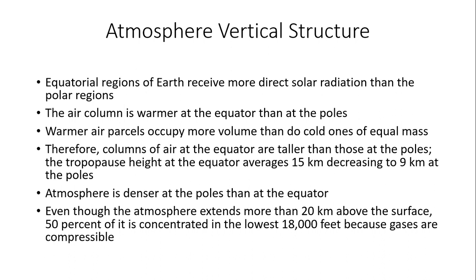The tropopause — the transition zone between the troposphere and the stratosphere — averages about 15 kilometers above the ground at the equator, decreasing to 9 kilometers at the poles. So in general, the atmosphere is much denser at the poles compared to the equator. Even though the atmosphere extends more than 20 kilometers above the surface, 50% of the atmosphere is concentrated in the lowest 18,000 feet because gases are so compressible.